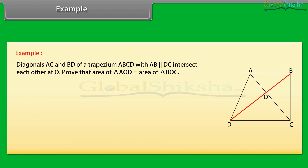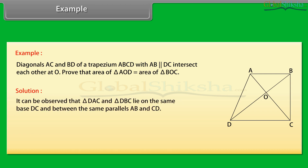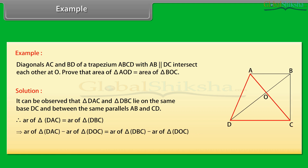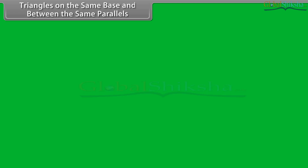Diagonals AC and BD of a trapezium ABCD with AB parallel to DC intersect each other at O. Prove that area of triangle AOD equals area of triangle BOC. Solution: It can be observed that triangle DAC and triangle DBC lie on the same base DC and between the same parallels AB and CD. Therefore, area of triangle DAC equals area of triangle DBC, which implies area of triangle DAC minus area of triangle DOC equals area of triangle DBC minus area of triangle DOC, which implies area of triangle AOD equals area of triangle BOC.